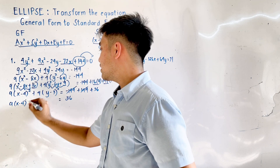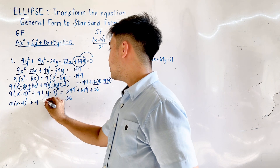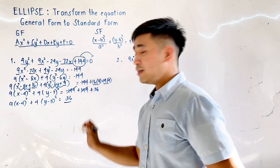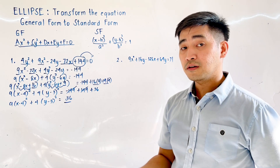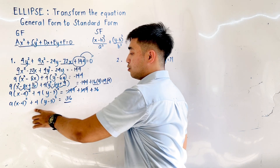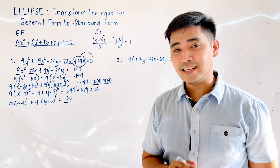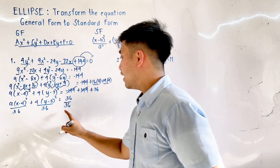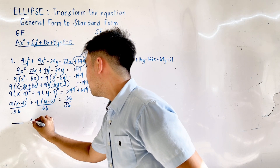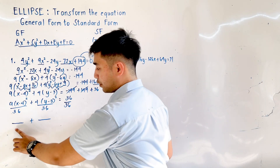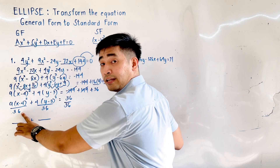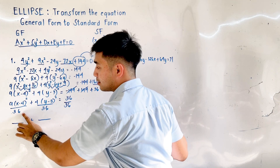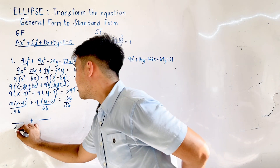Rewrite the left side: 9(x − 4)² + 4(y − 3)² = 36. The right side of the standard equation of an ellipse must always equal 1, so we divide both sides by 36. Using the technique — denominator divided by the factor — 36 ÷ 9 = 4, so x² is over 4. And 36 ÷ 4 = 9, so y² is over 9. This gives us the standard form.